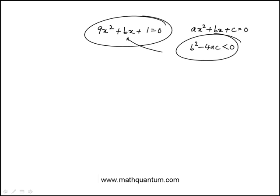So we're going to apply this condition here. b is b, a here is 9, and c is 1. So this is b² < 36.